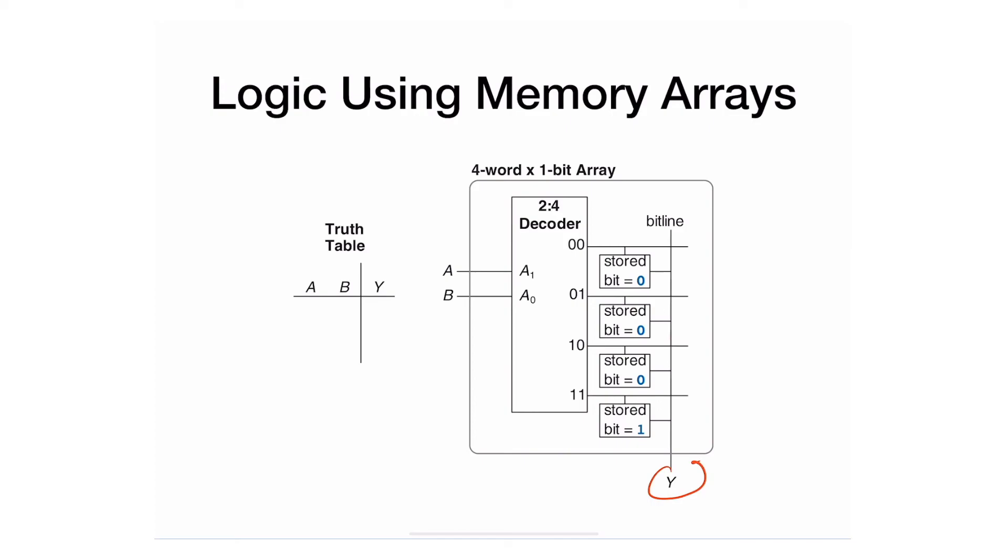You can think about the whole thing as a combinational circuit. You have A and B as inputs and Y as an output. Each column gives you an output. Because I have two inputs, I have four rows. But if I have more inputs, I'll have two to the power of the number of inputs rows.